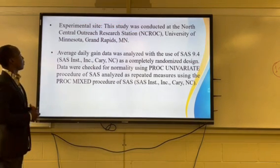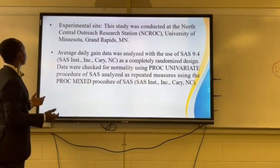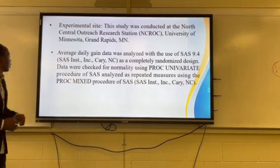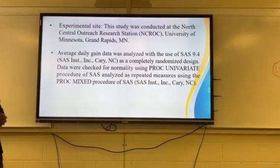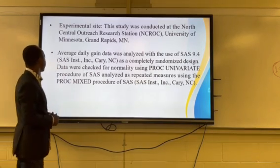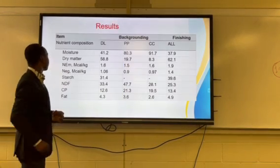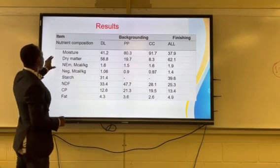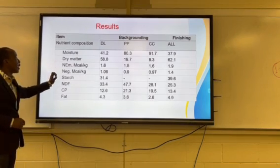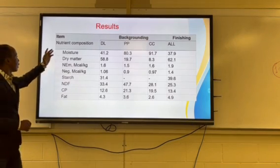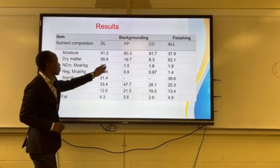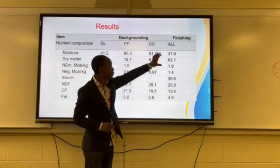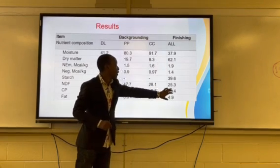The experimental site was North Central Agricultural Research Station of the University, and the data was analyzed with SAS. This shows the nutritional composition of the experimental diets — the drylot, the perennial pasture, and cover crops — as well as the finishing diets.